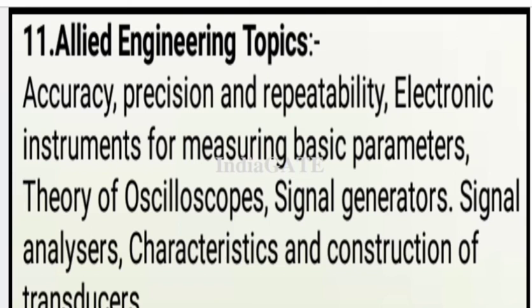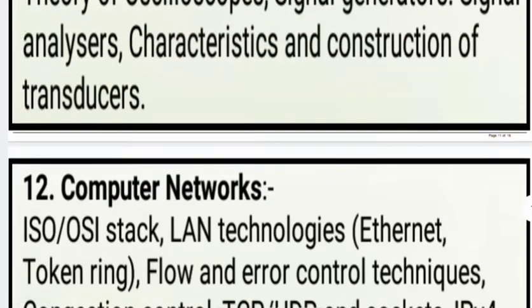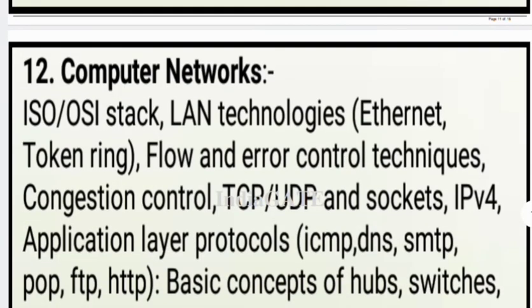The next subject is aligned engineering topics (instrumentation), which is not included in the CSIT syllabus — this is one reason the electrical and CSIT syllabi differ. Important topics here are: accuracy, precision, repeatability, electronic instruments for measuring basic parameters, theory of oscillation, signal generators, signal analysis, and characteristics and construction of transducers.